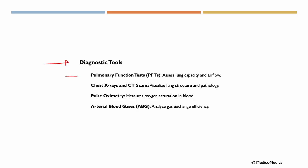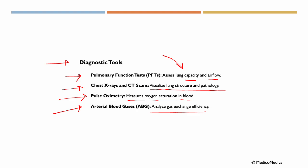Now let's talk about some common diagnostic tools. We have pulmonary function tests, which assess lung capacity and airflow. We have chest x-rays and CT scans, where we visualize lung structure and pathology. We can do pulse oximetry, where we measure oxygen saturation in the blood. And arterial blood gases, where we analyze gas exchange efficiency. For example, some patients will breathe into a spirometer, checking their capacity and how well their lungs are functioning. If a patient has pneumonia, we can do a chest x-ray to see signs of fluid buildup, scarring or fibrosis, or if we suspect lung cancer.